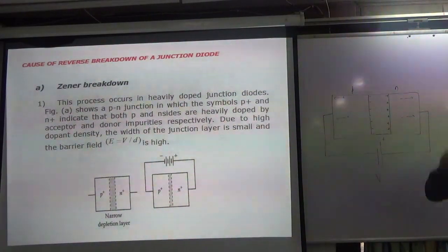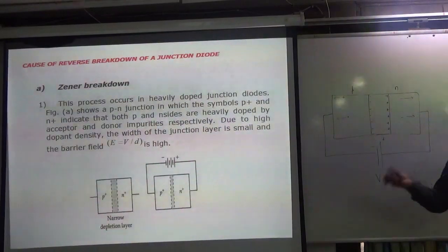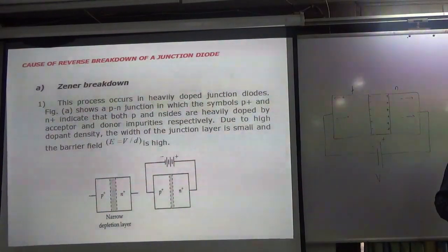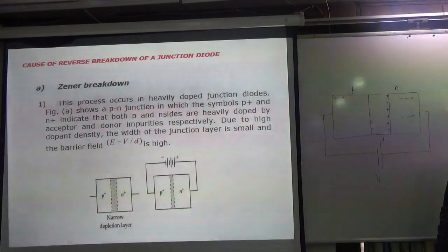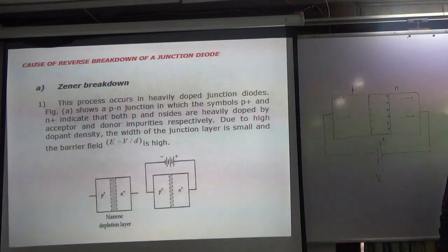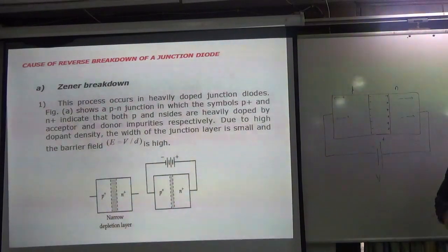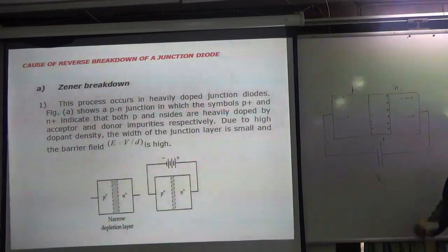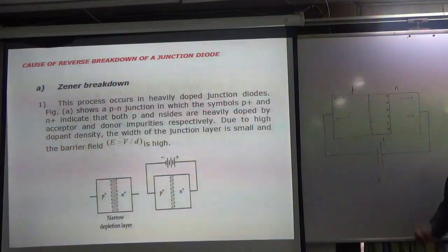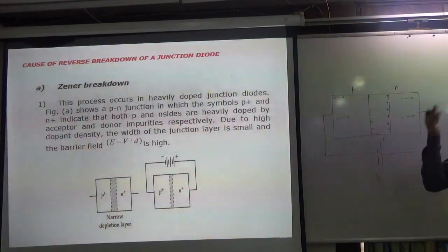When the diode breaks down and gives the current to pass, then it does not work as a diode. Because the diode's job in reverse biasing is to block the current. In a normal diode, when the minority current is increased, we call it breakdown.